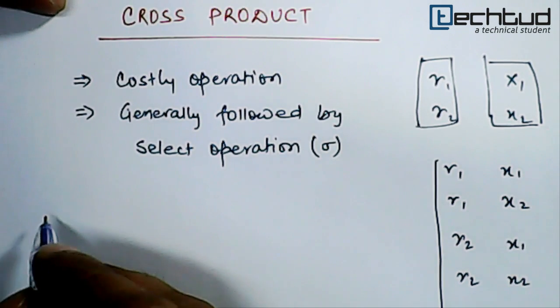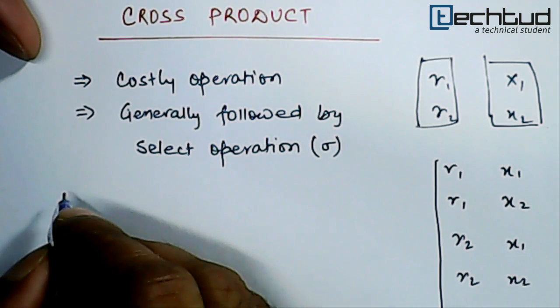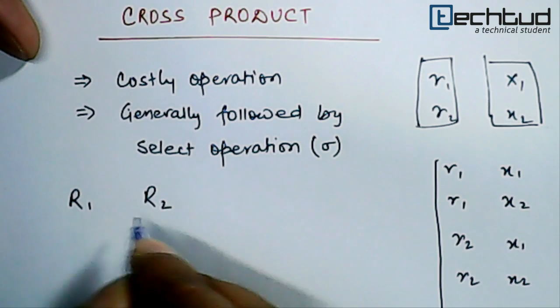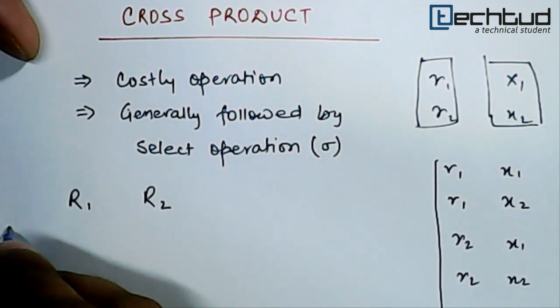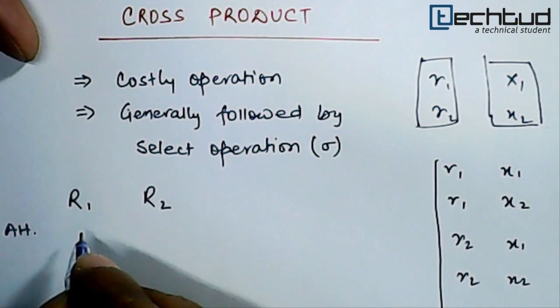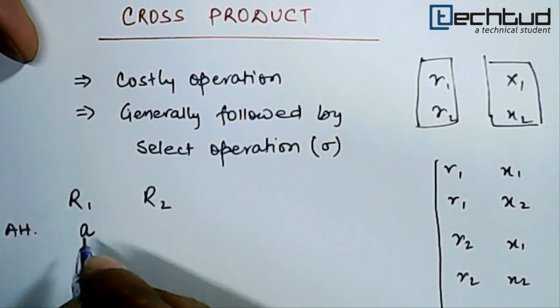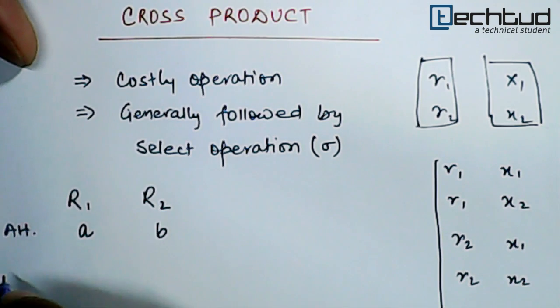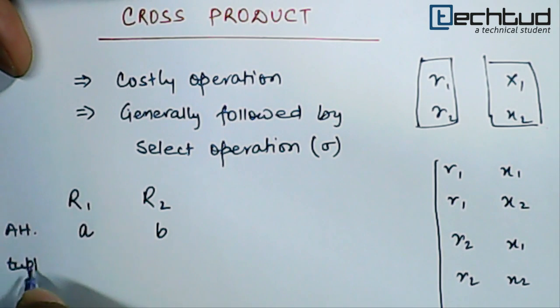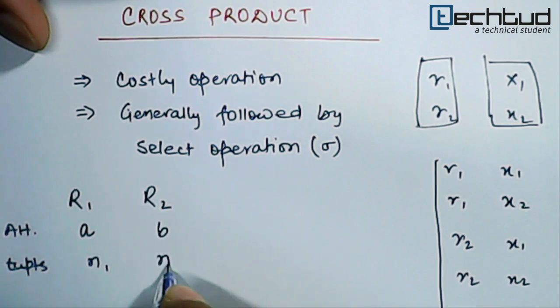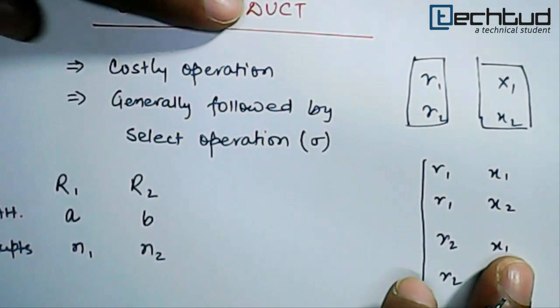Now let's say if we have two tuples or two relations R1 and R2, and these two relations have, let's say, number of attributes is a and b, and the number of tuples in both the relations, that is number of tuples are let's say n1 and n2.